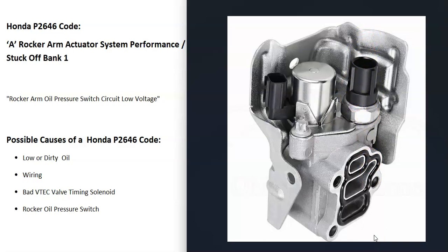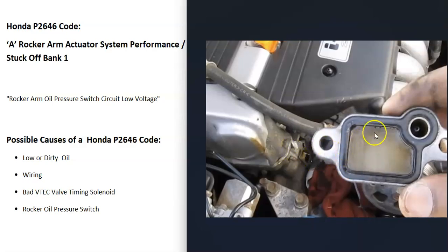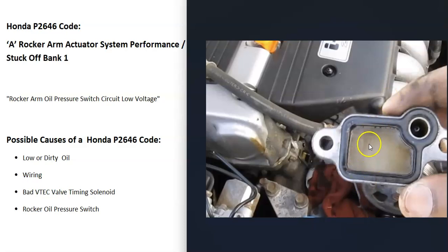One thing about this error code is that if the engine oil was dirty at some point or hasn't been changed regularly, the old dirty oil can block up the little screens located around the VTEC. For example, this one right here has little screens inside that need to be cleaned — they can get dirty and clogged up with age or from dirty oil running through.